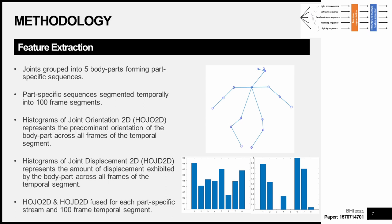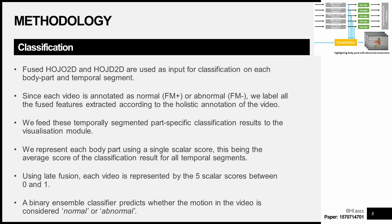The fused HOJO2D and HOJD2D features are then used as input for classification on each body part and each temporal segment. Since each video is annotated as normal or abnormal, we label all fused features according to this holistic annotation. The results of this classification process are fed to both the visualization module and a final classification module. Because we process the video sequentially, we are essentially detecting fidgety movements spatiotemporally. For the final classification, we represent each body part using a single scalar score — the average classification result across all temporal segments — and fuse these five scalar scores to generate a binary classification using an ensemble classifier predicting whether the video is normal or abnormal.